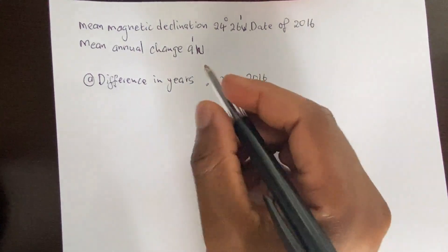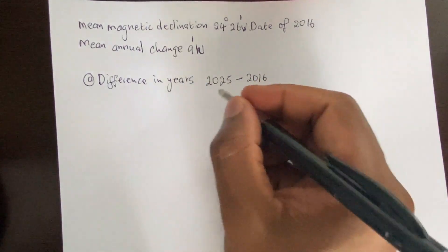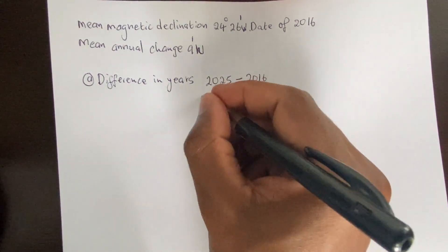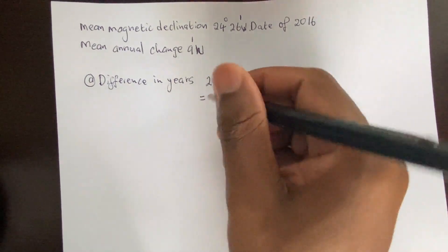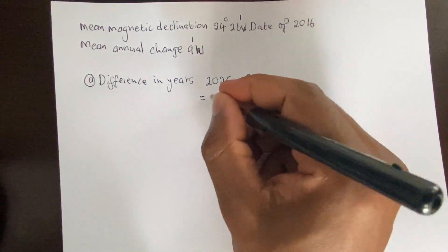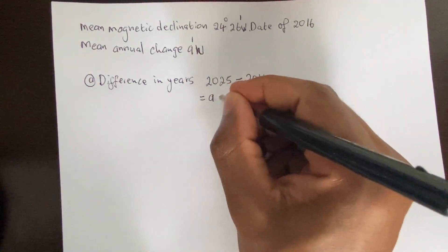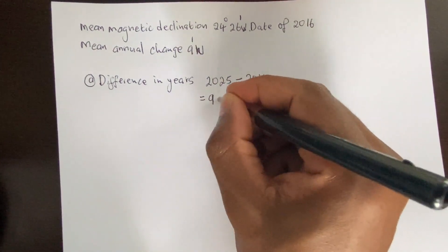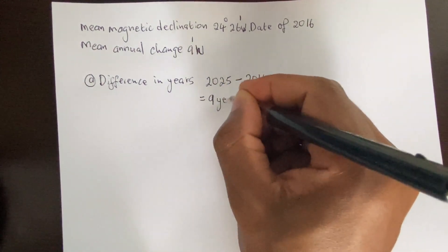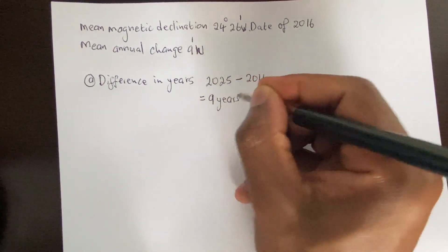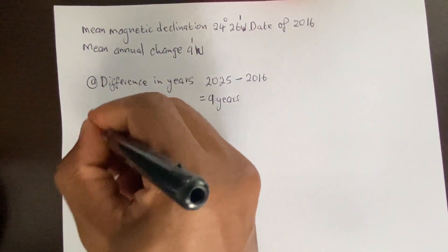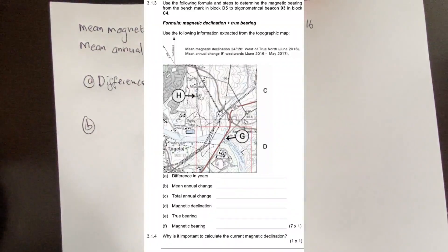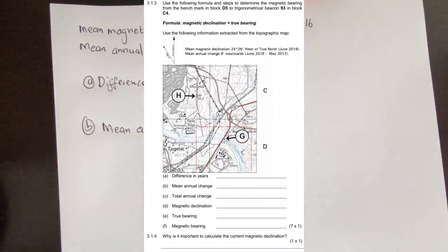Step A: Calculate the difference in years. 2025 minus 2016 — 2025 is the current year and 2016 is the year of the map — gives us 9 years.